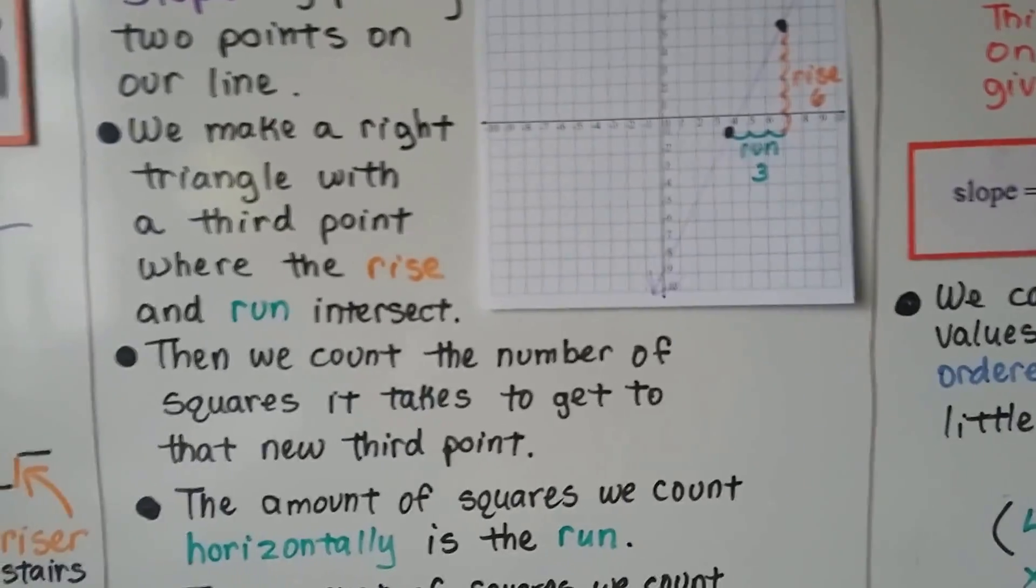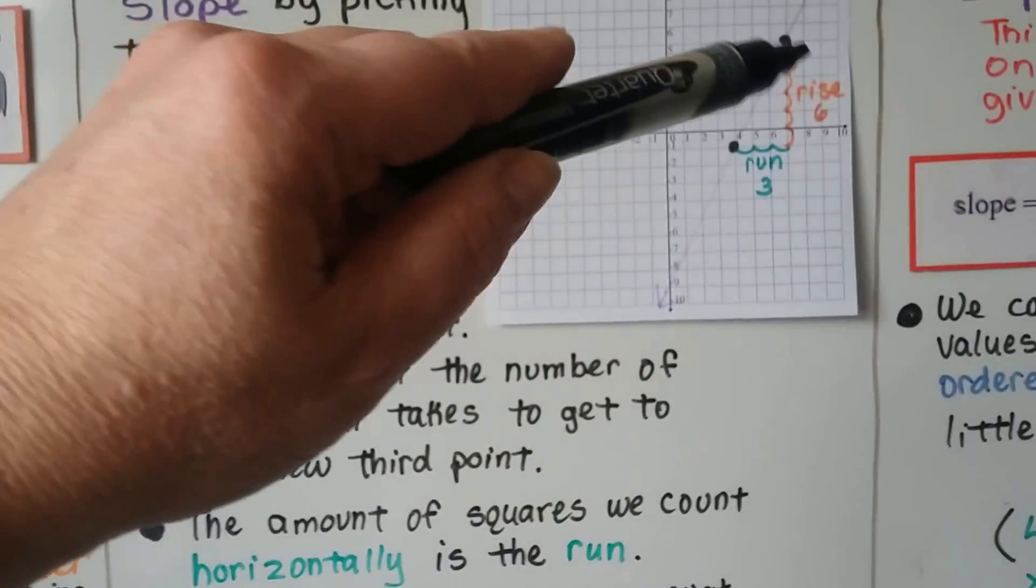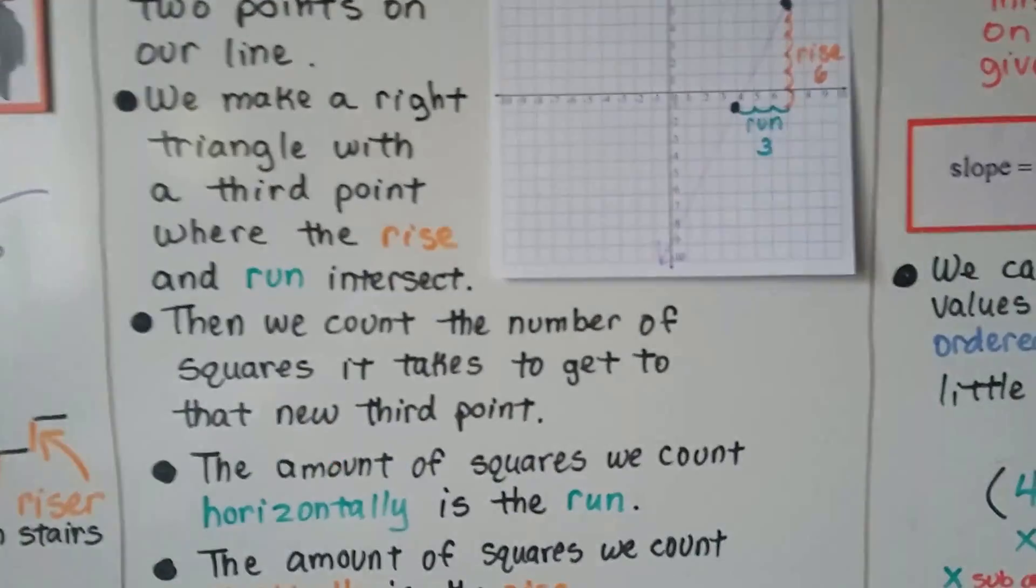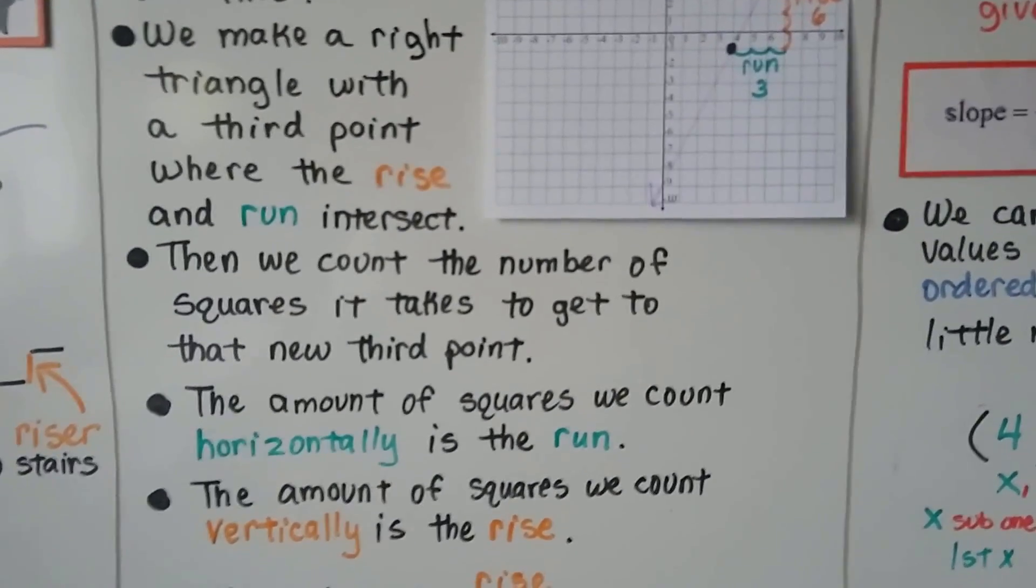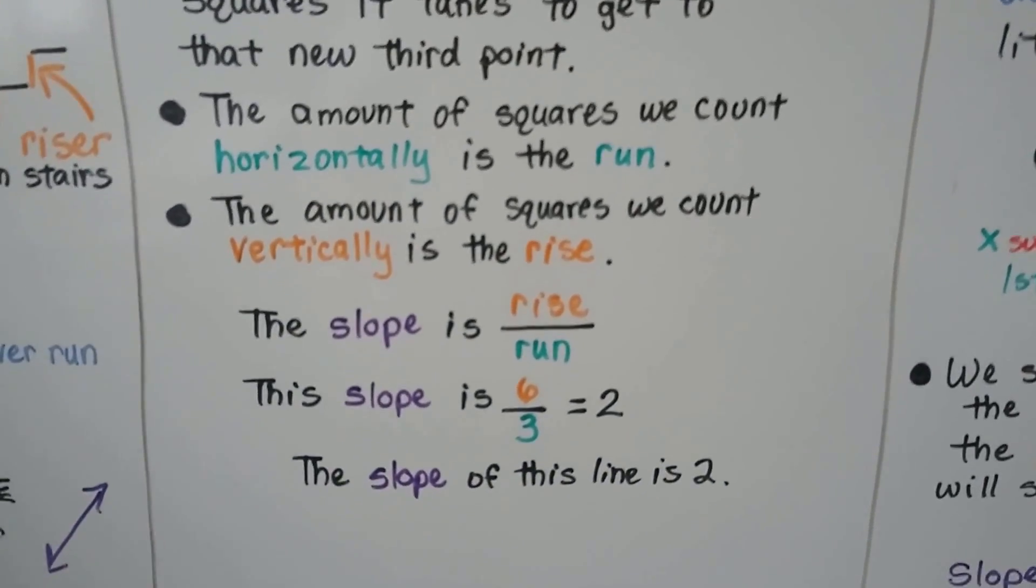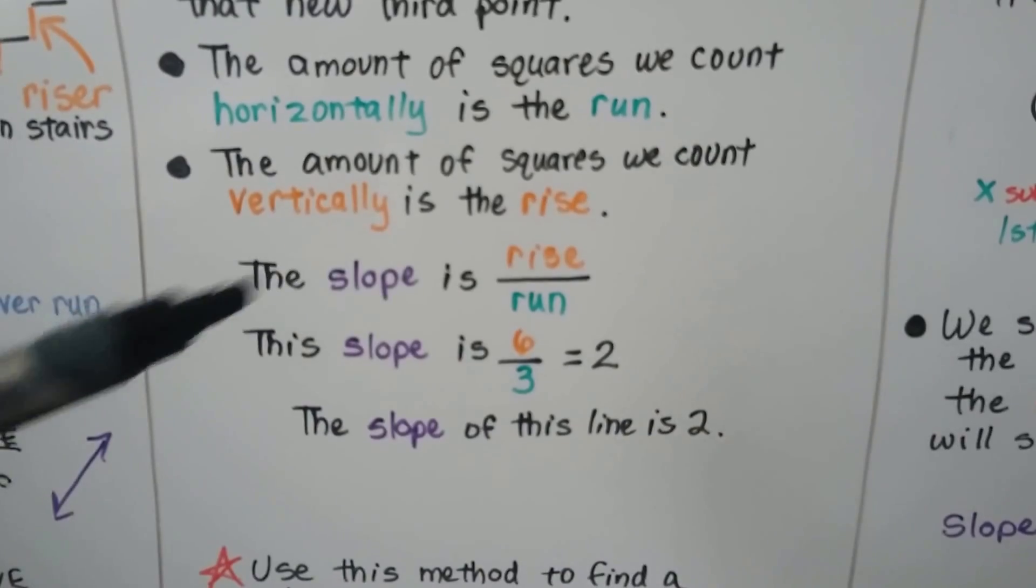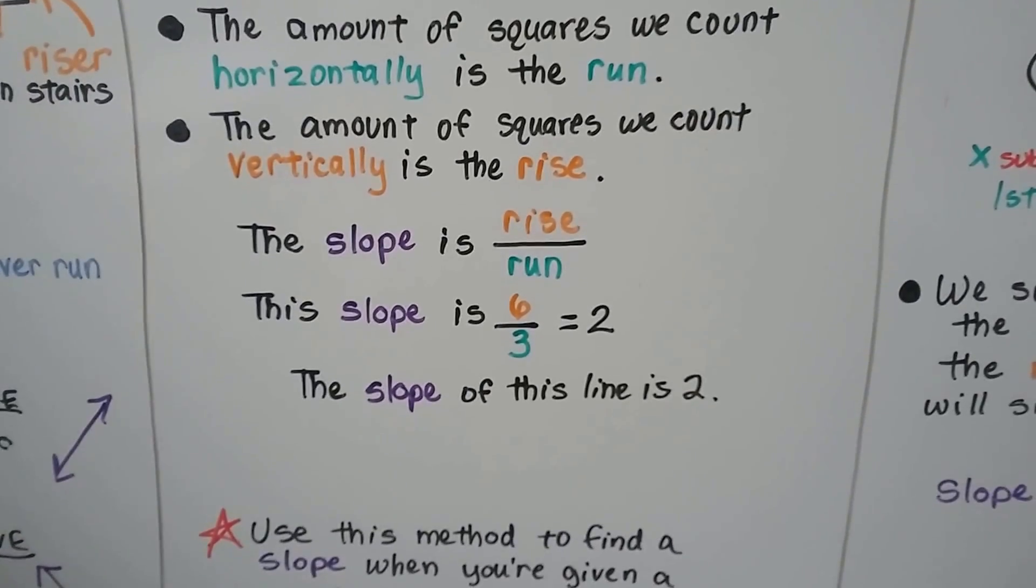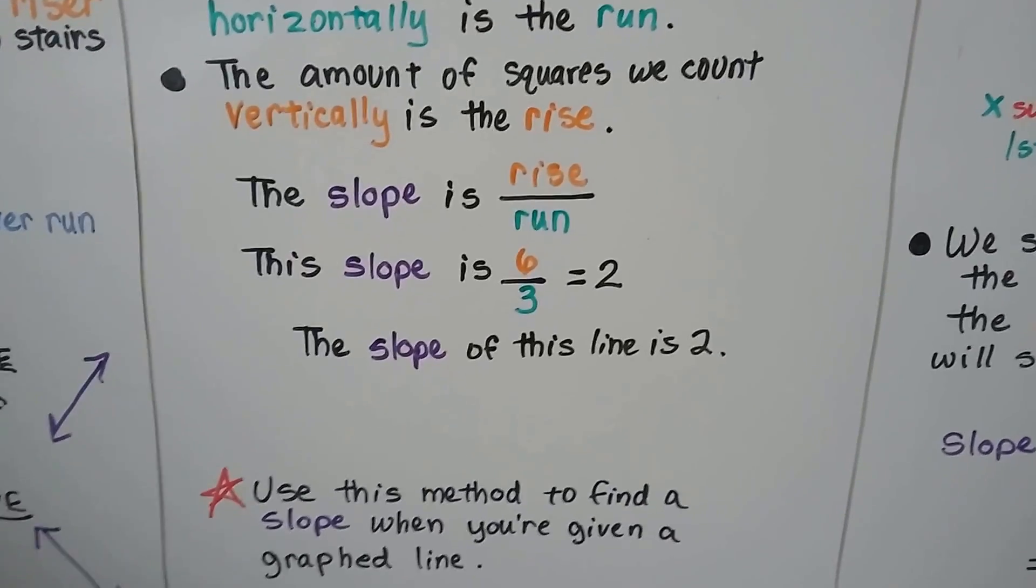We count the number of squares it takes to get to that third point, six and three. The amount of squares we count horizontally is the run, and the amount of squares we count vertically is the rise. And the slope is the rise divided by the run. So this is six divided by three, which simplifies to two. So the slope of that line is a two.